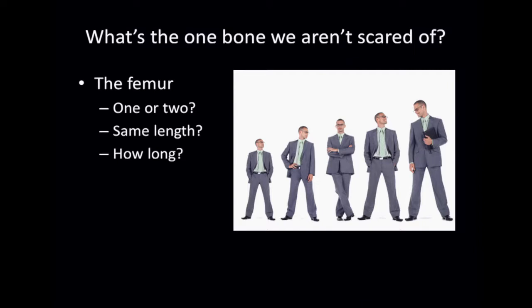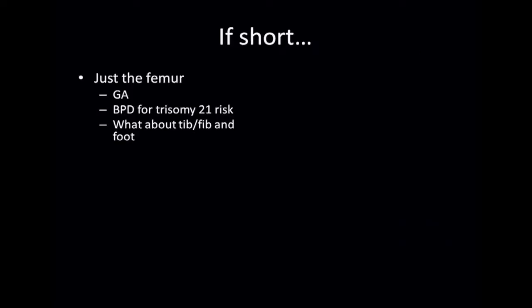Are there one or two? And you might think, really? But yes, you should check that two lower extremities are there and that the femurs are symmetrical in length. And then you need to look at the length of the femur. And when we talk about the length of the femur, what do we really mean by that? We mean whether it is appropriate for gestational age or not.